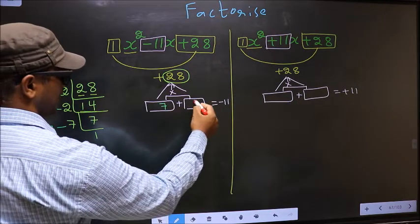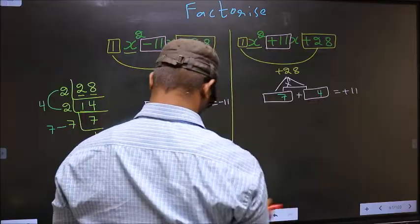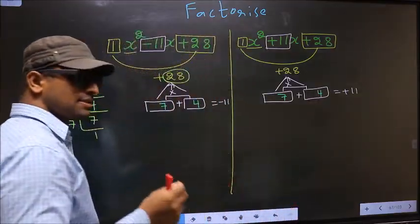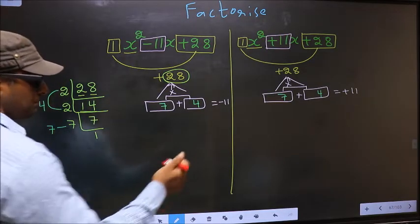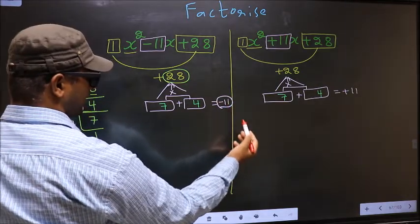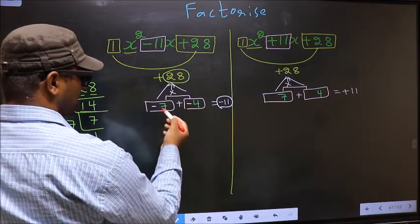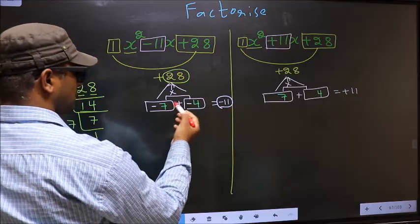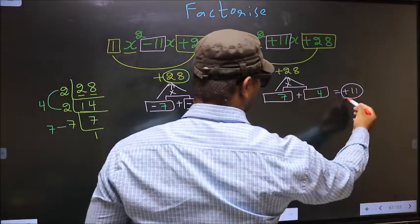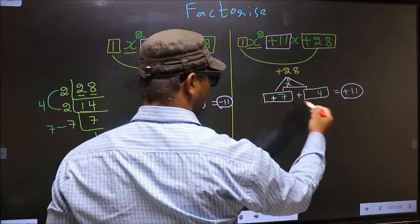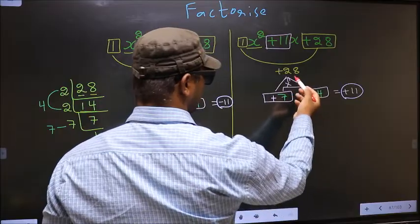So here we write 7 and here we write 4. Here also, same — 7 and 4. The difference arises while adjusting the signs. Over here we should get minus 11, so to get minus 11, we place negative here and also here. Minus 7 minus 4 is minus 11, and minus 7 into minus 4 is plus 28. Now here we should get plus 11, so I put plus here and also here. Plus 7 plus 4 is plus 11, and plus 7 into plus 4 is plus 28.